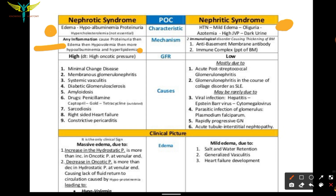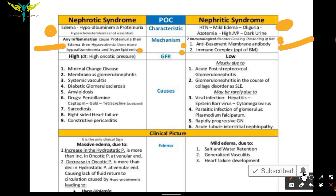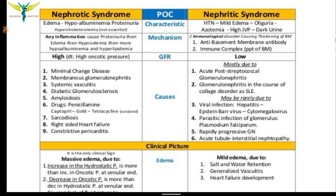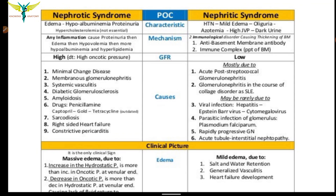The mechanism of nephritic syndrome is mainly caused by immunological disorder and the development of anti-basement membrane antibody. Immune complexes also lead to nephritic syndrome. The glomerular filtration rate (GFR) is high in nephrotic syndrome compared to nephritic syndrome.